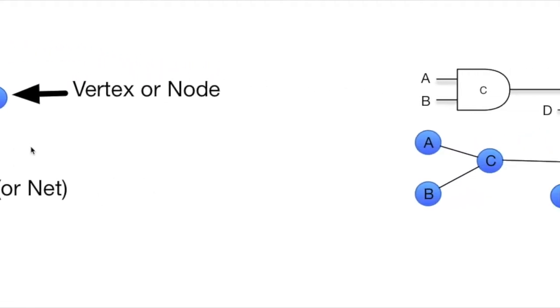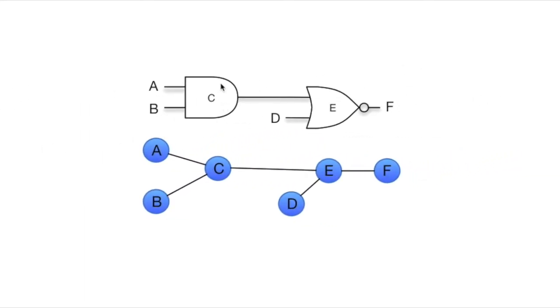Where they show up is you might have a circuit. I've got this AND gate over here, inputs A, B, and Z, and then a NOR gate over here. And you can translate that into a graph. So input A, this vertex here, AND gate over here. Pretty straightforward so far.